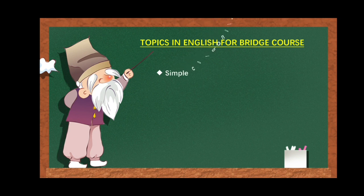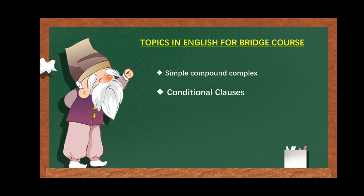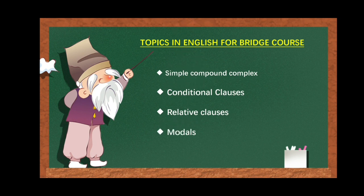Everything we are going to cover, including simple, compound, and complex sentences — how to change sentences into simple, compound, and complex. The basic seven rules and more than seven rules, we are going to discuss deeply. Conditional clauses — which is new to you. The if-clause and unless-clause, both we are going to see. And relative clauses — in 10th standard you saw just a slight introduction, but here we are going to see it very deeply, which is also very important.